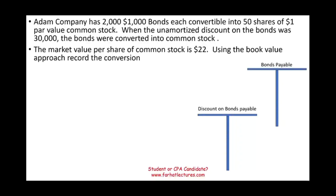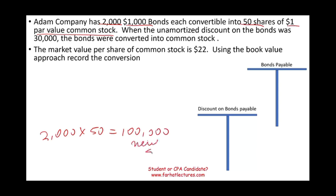Hello and welcome to this session in which we look at a bond conversion example. Adam Company has 2,000 bonds, each convertible into 50 shares of $1 par value common stock. In simple terms, I have 2,000 bonds and the conversion is 50 shares per bond, which means if I convert, I can possibly issue 100,000 new shares of stock.